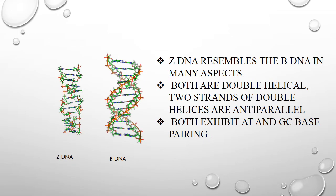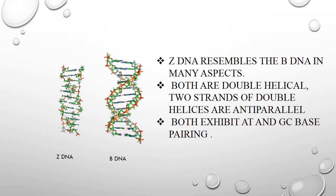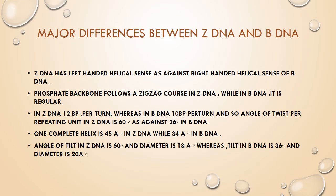Z-DNA resembles B-DNA in many aspects: both are double helical, the two strands are anti-parallel, and both exhibit A-T and G-C base pairing. The major differences are that Z-DNA is a left-handed helix, against the right-handed helix of B-DNA. The phosphate backbone follows a zigzag pattern in Z-DNA, while in B-DNA it is regular. Z-DNA has 12 base pairs per turn, whereas B-DNA has 10. The angle of twist per repeating unit in Z-DNA is 60 degrees, as against 36 degrees in B-DNA. One complete helix is 45 angstrom in Z-DNA while 34 angstrom in B-DNA.